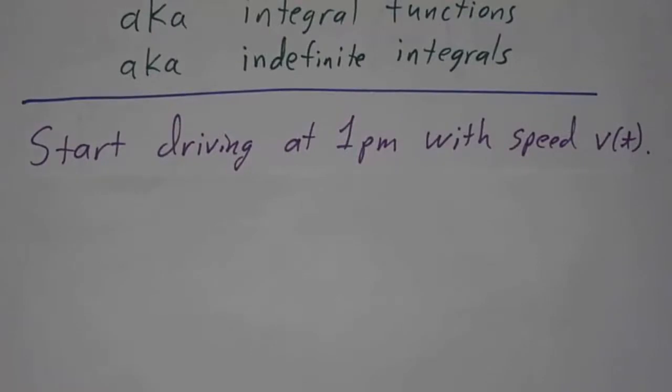Let's start with a problem. Suppose you're driving down the road, and you start driving at 1 o'clock in the afternoon, and your velocity, or actually your speed, is a function v(t), where t is time.